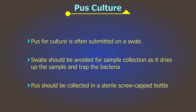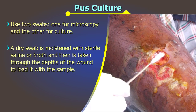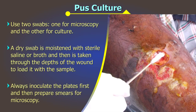If, however, a swab is decided to be used, use two swabs — one for microscopy and the other for culture. A dry swab should be first moistened with sterile saline or broth and then taken through the depths of the wound or lesion to load it with the sample. Always inoculate the plates first and then prepare smears for microscopy.